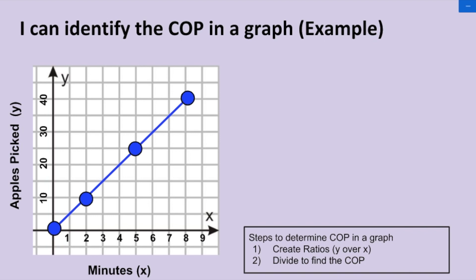And if we take a look at the steps, they're going to look very familiar, right? They're exactly the same as the steps for finding the COP in a table. First we're going to create ratios, y over x, and then we're going to divide to find the COP.